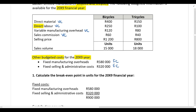This question is quite straightforward — I didn't want to confuse the calculation with semi-variable costs. Instead, this example is to show you how to deal with a situation where a company sells more than one product. In the first part of the required, you need to calculate the break-even point in units for the 20x9 financial year.